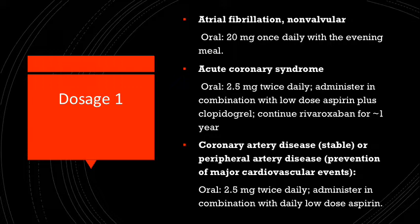For those with acute coronary syndrome it is 2.5 milligrams twice daily, administered in combination with low-dose aspirin plus clopidogrel for a span of one year. For those with coronary artery disease or peripheral artery disease it is 2.5 milligrams twice daily administered in combination with low-dose aspirin.